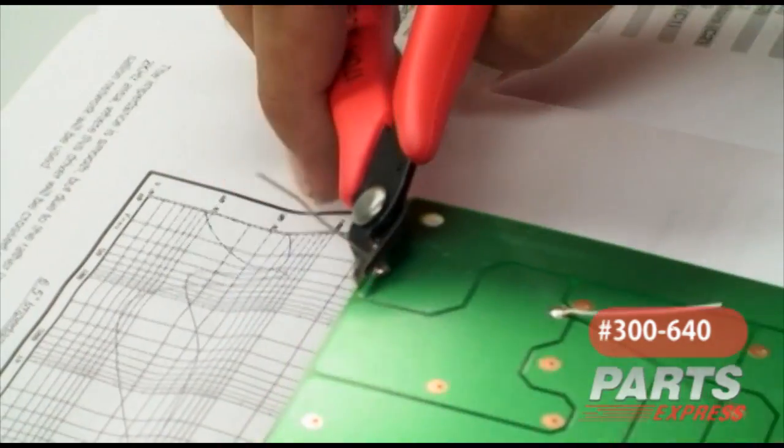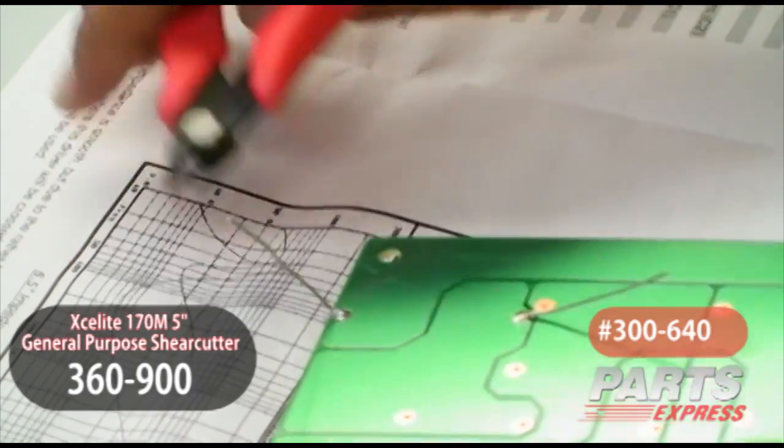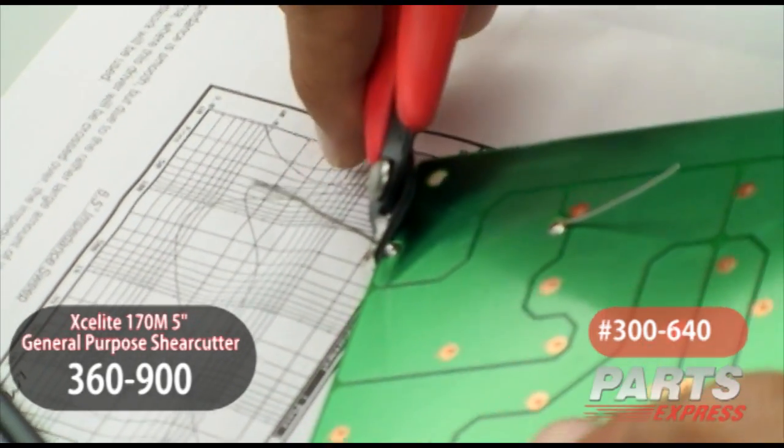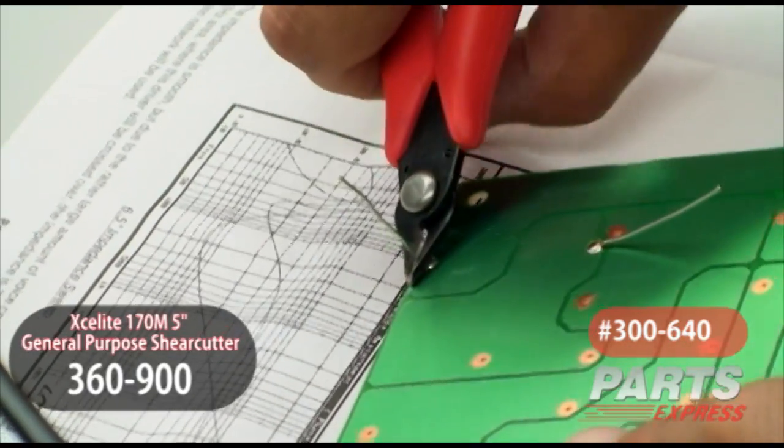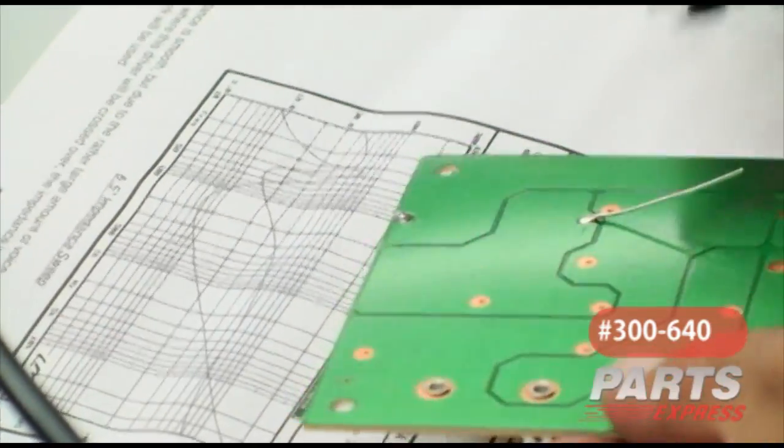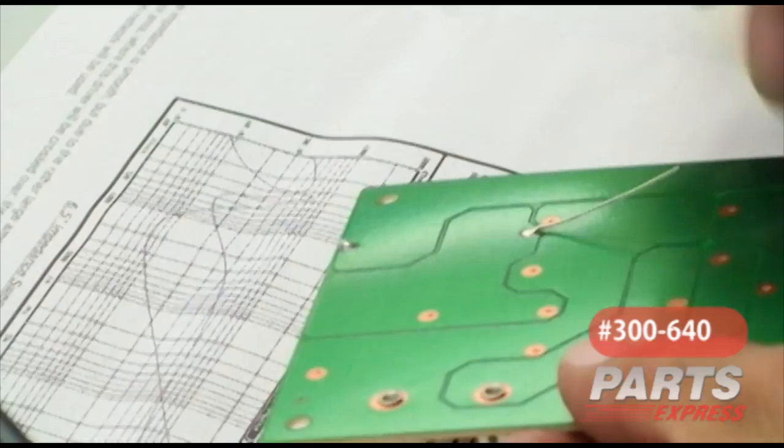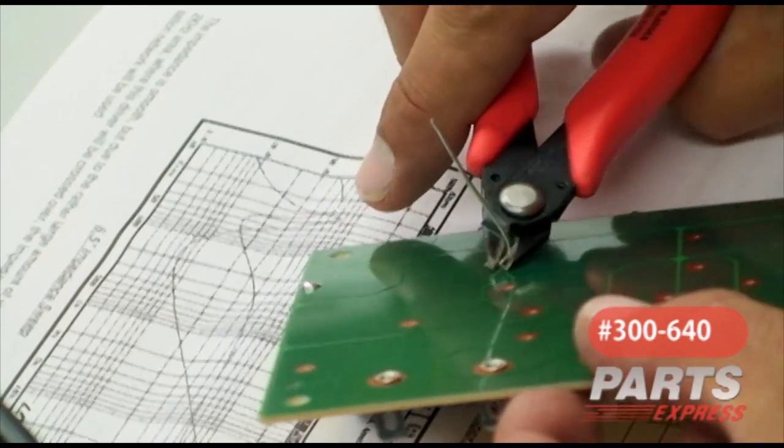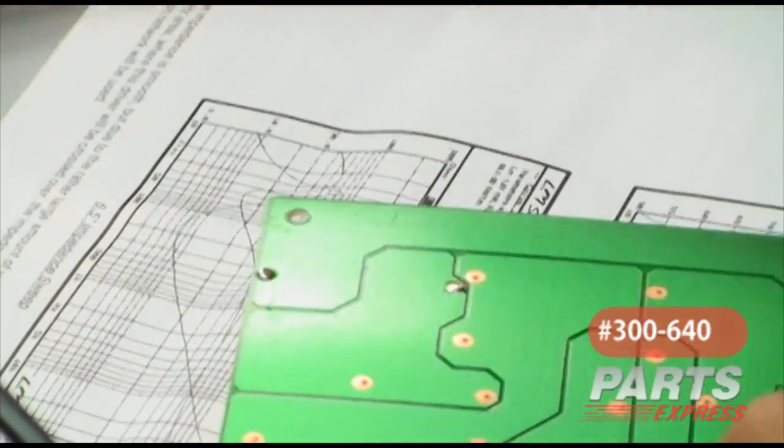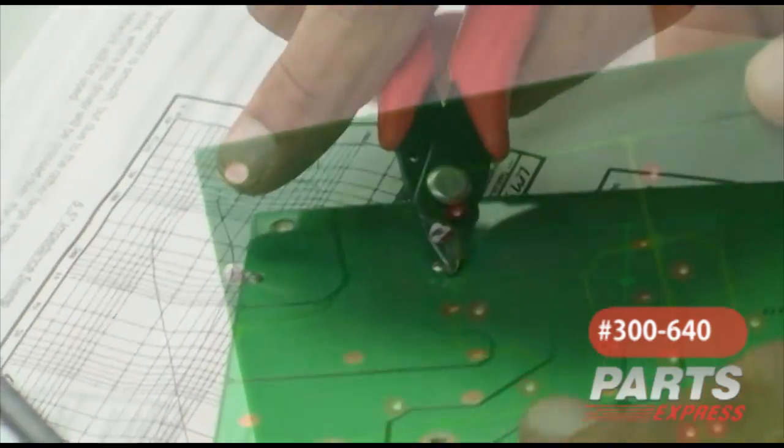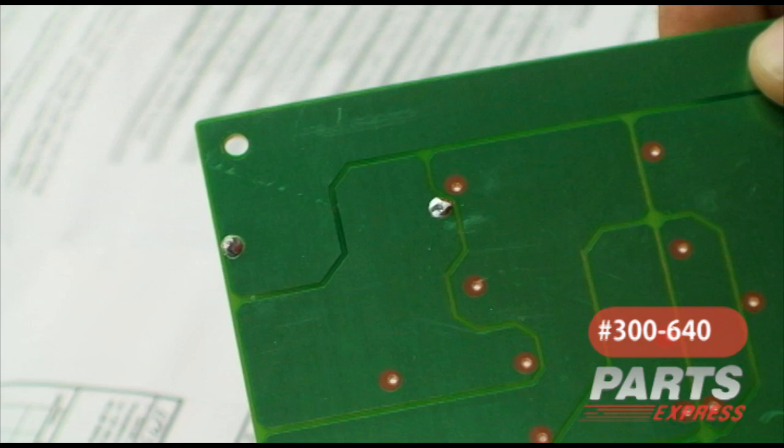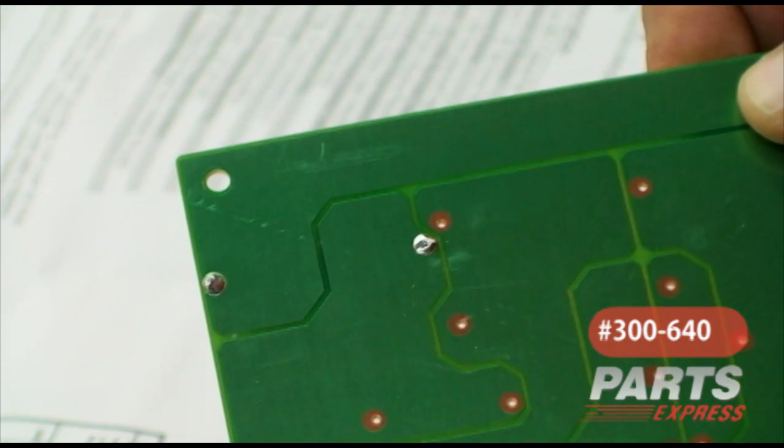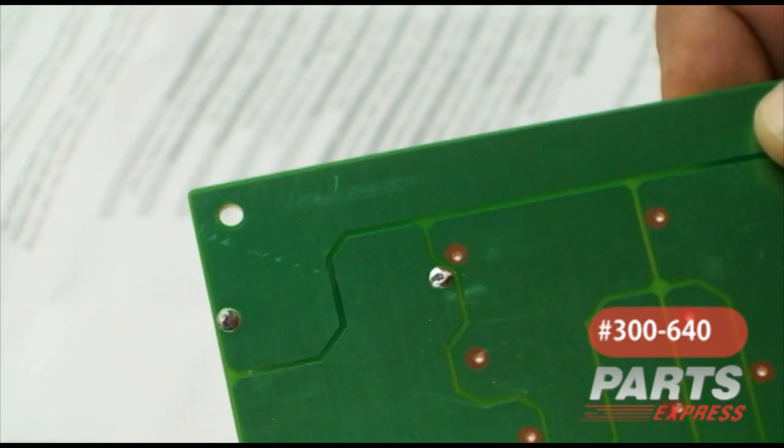I recommend the ExaLite small diagonal cutters that we sell here at Parts Express. They work very well for this application. What you want to do is go all the way to the base of where the lead comes out and just simply cut and remove. Stand this back up, get as close as you can, cut and remove. What you're looking to avoid is any type of short between one junction and where another one might occur. That's another reason I recommend just doing one component at a time.